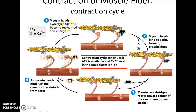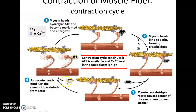When troponin binds calcium ions, it changes shape, moving the tropomyosin and exposing the binding sites on actin, allowing myosin to bind. The contraction cycle begins: myosin breaks down ATP into ADP, preparing to bind actin. Myosin then binds actin, forming a cross-bridge. It releases its ADP and performs the power stroke, moving thin filaments toward the M-line, shortening the sarcomere. Myosin then binds a new ATP molecule, releases actin, and the cycle repeats.